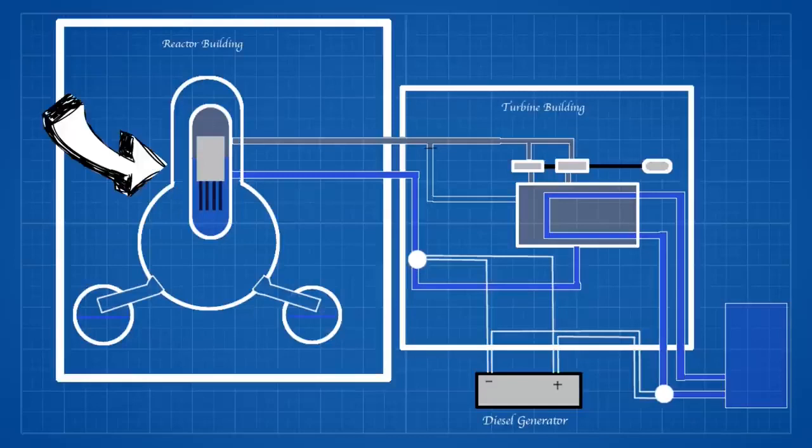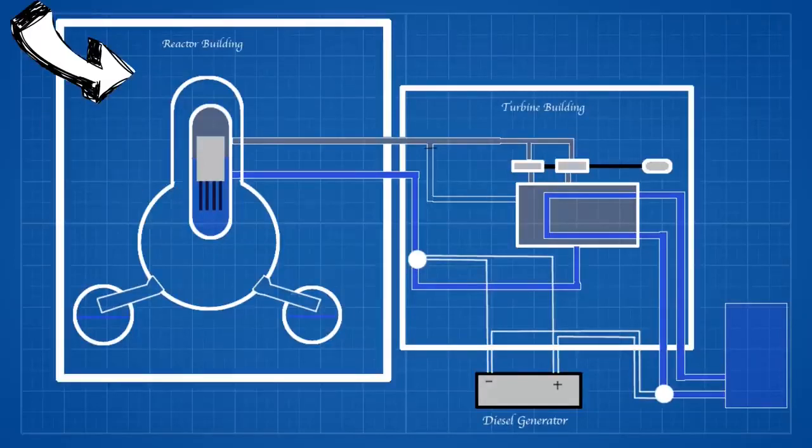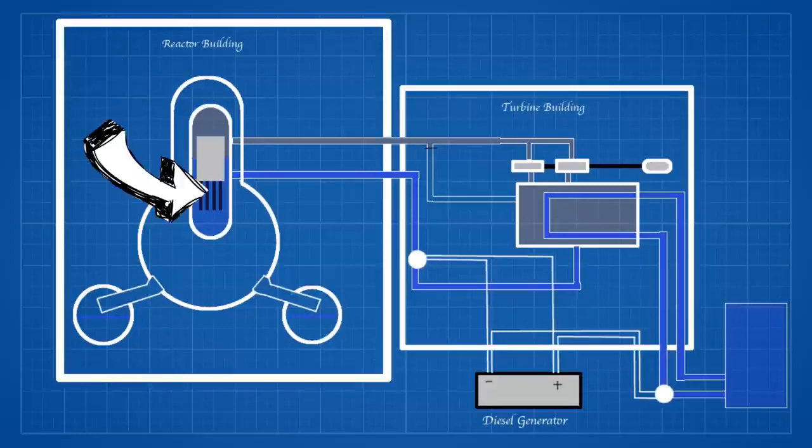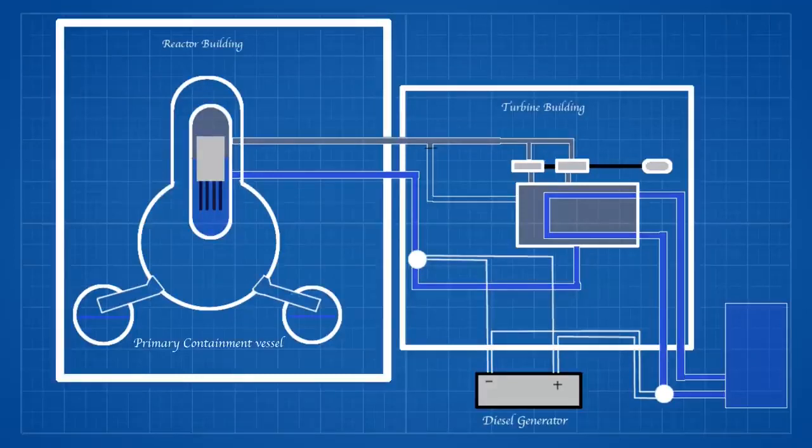The first being the reactor primary containment vessel, the second being the building in which it is housed. The core is kept within a containment vessel. Around the vessel there is an outer containment which is enclosed by a concrete plug. The plug can be moved by a crane over the spent fuel pool. The spent fuel pools is where used fuel rods can be stored.